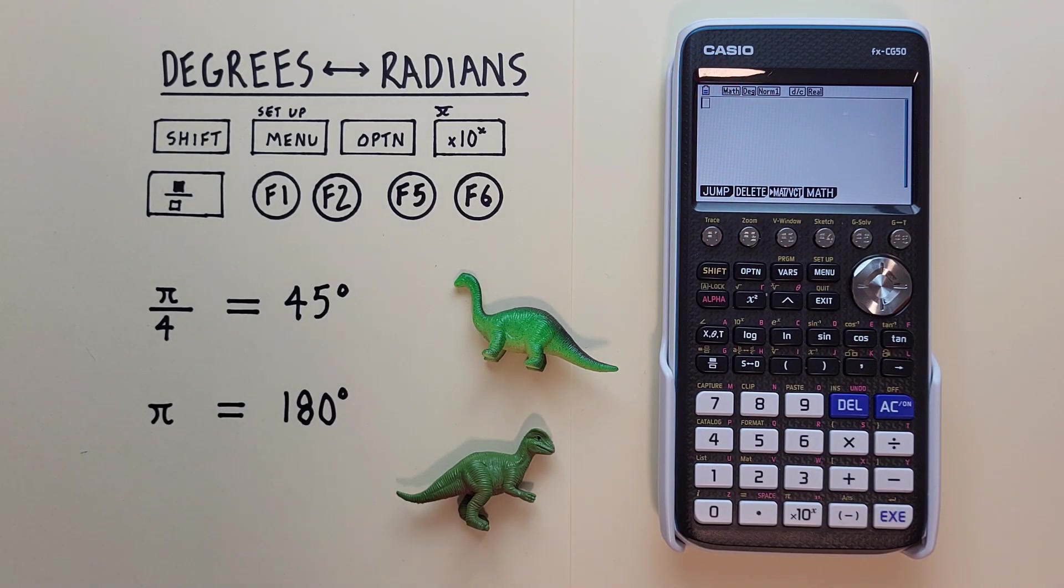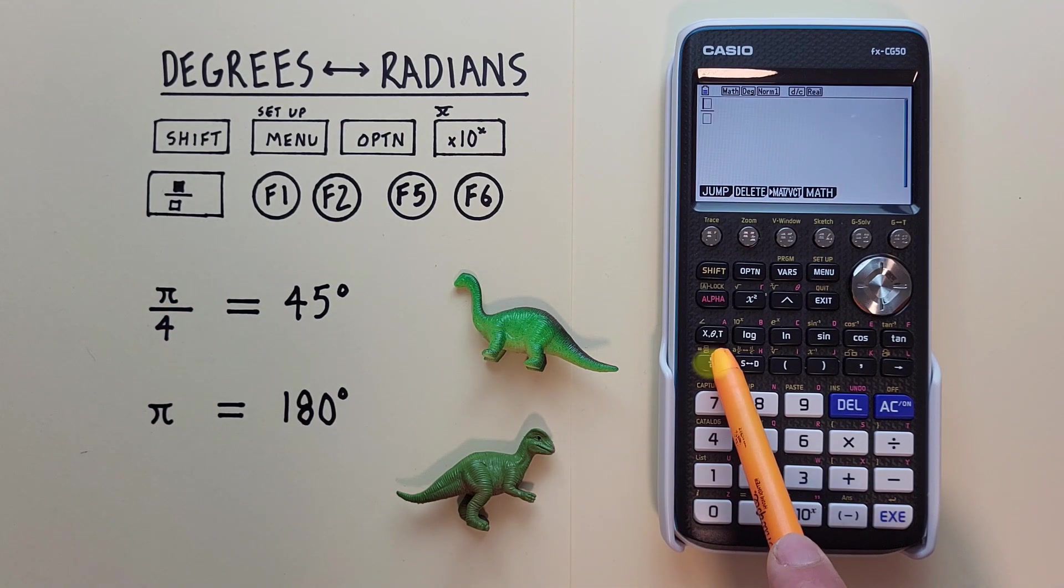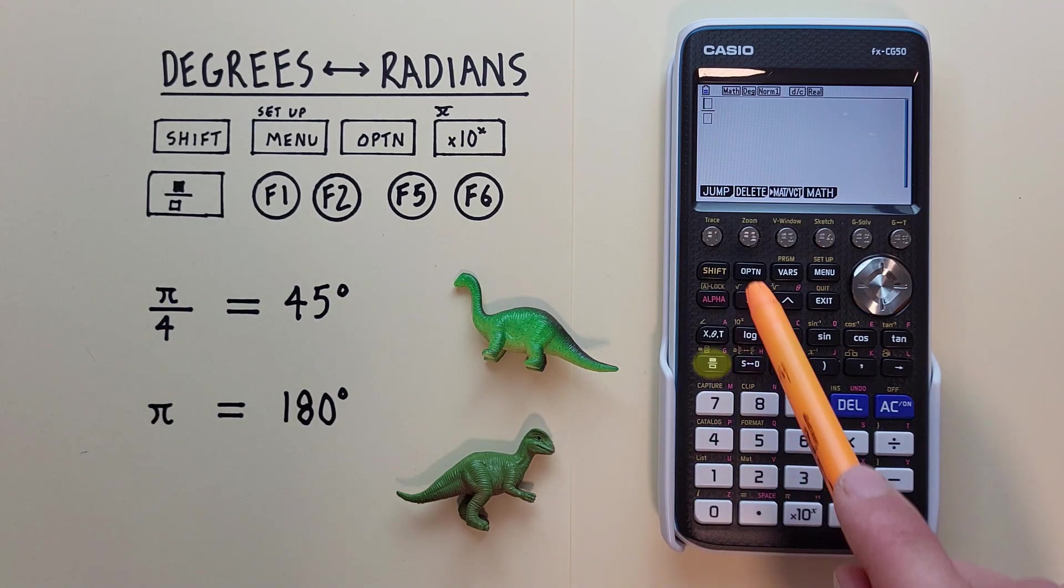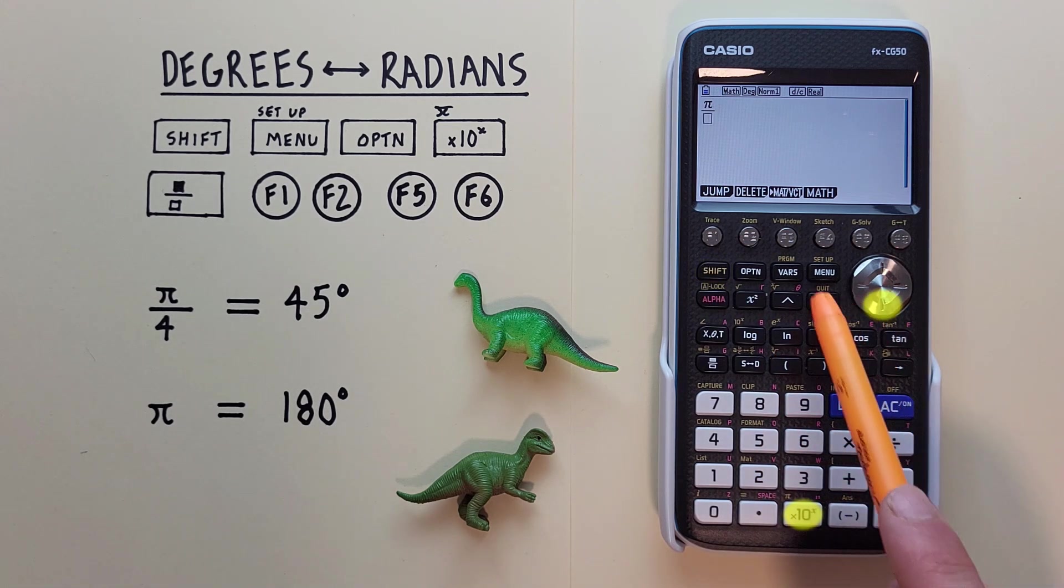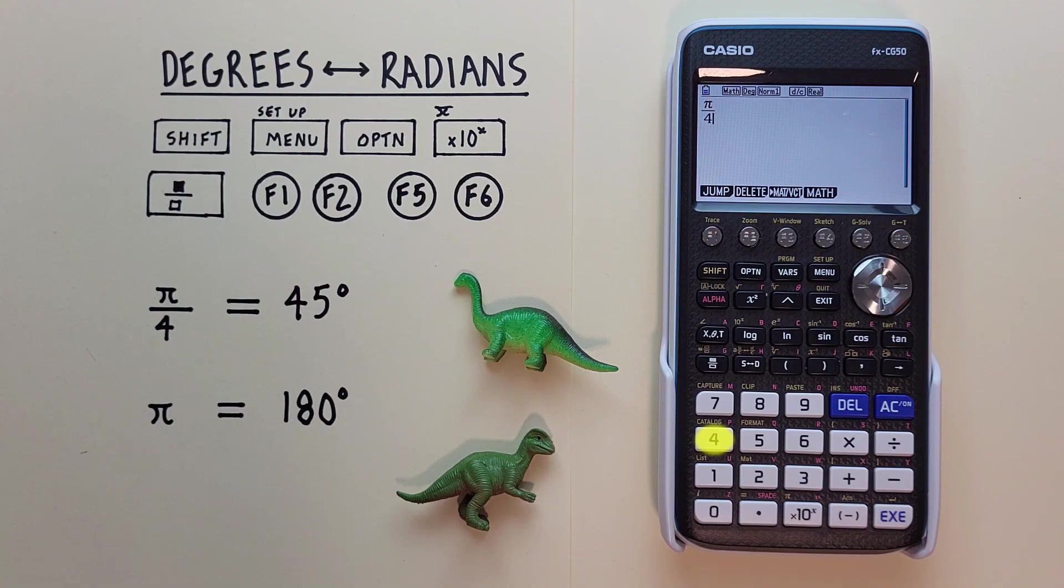Now we enter our radians, which is Pi over 4. So we use Fraction, Shift, Pi, scroll down, and then 4. And then scroll to the right one.